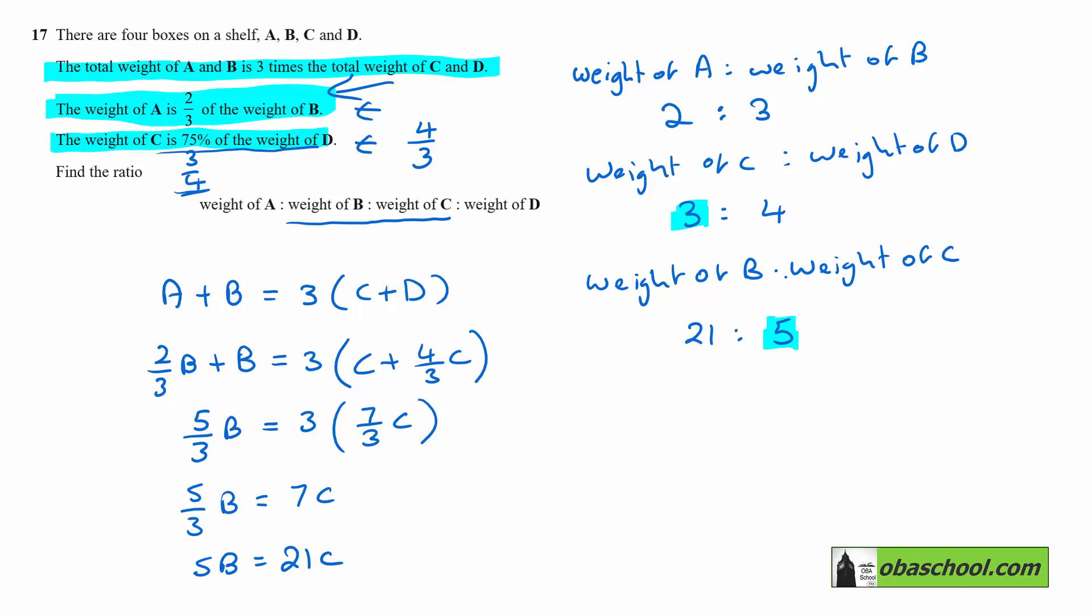If we made the weight of C 15, then that makes the weight of D, multiply that by five as well, that makes that 20.